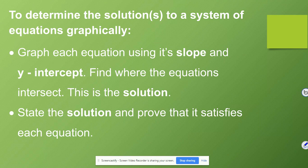To determine the solution to a system of equations graphically, you're going to graph each equation using its slope and y-intercept. Then you're going to find where the equations intersect — this is the solution. Last, you're going to state the solution and prove that it satisfies each equation.